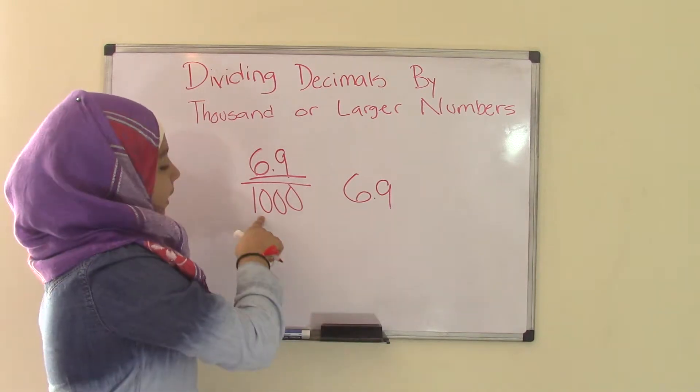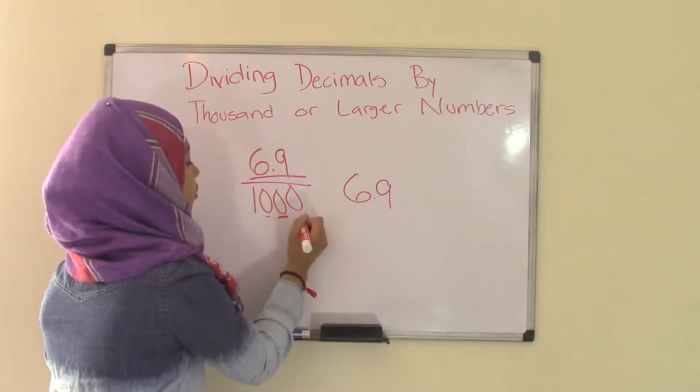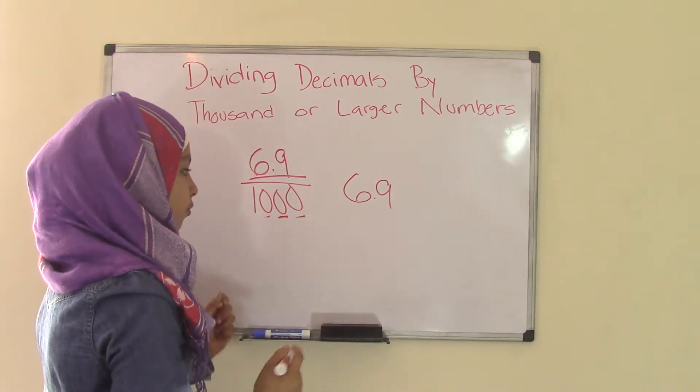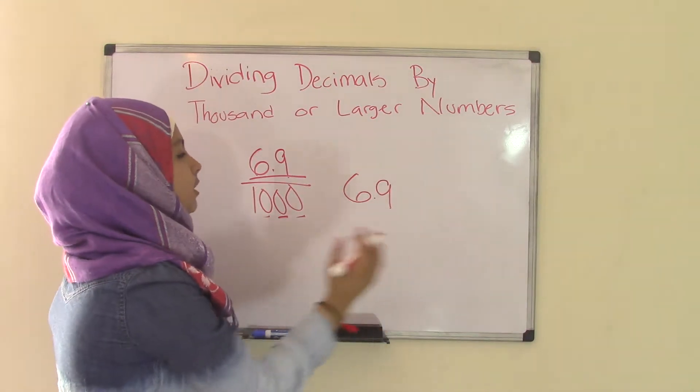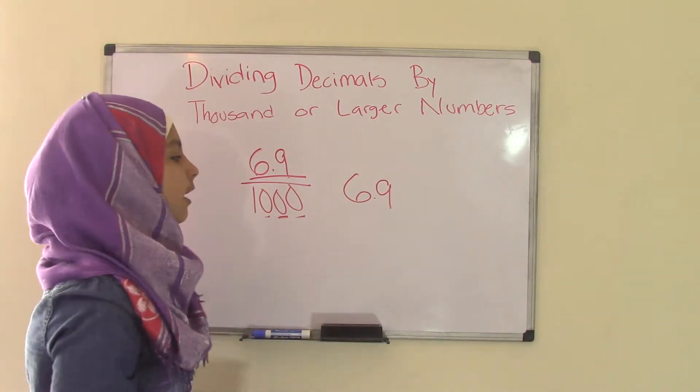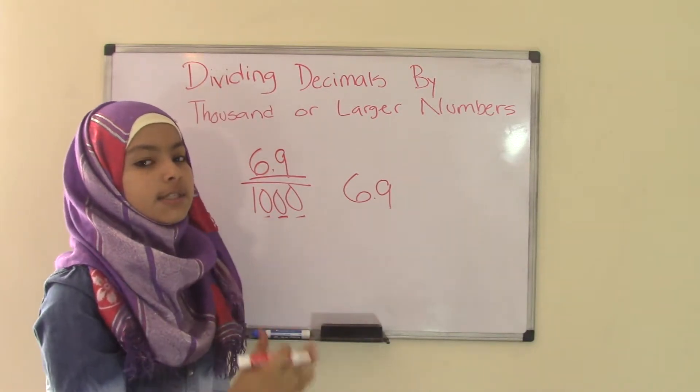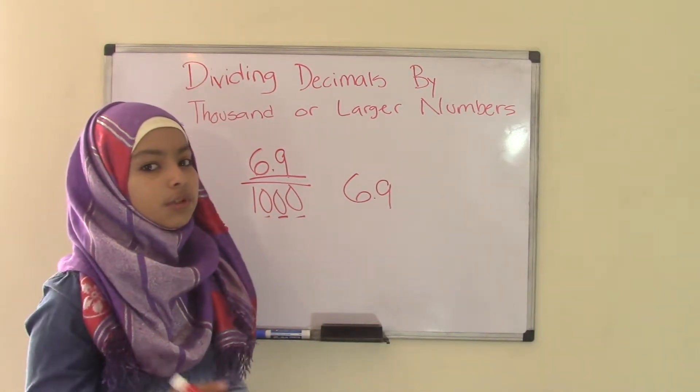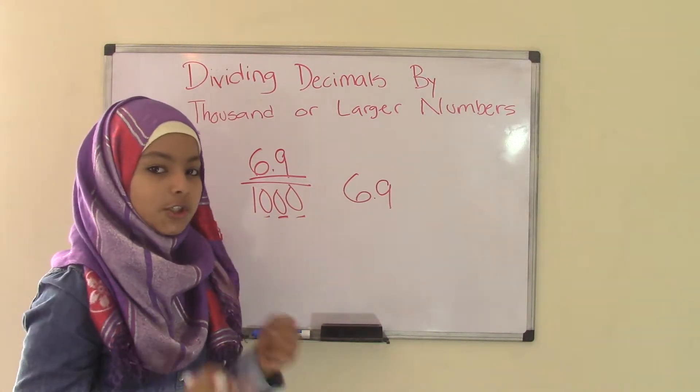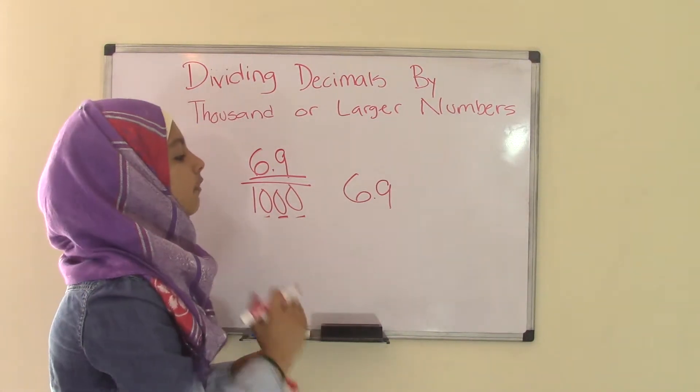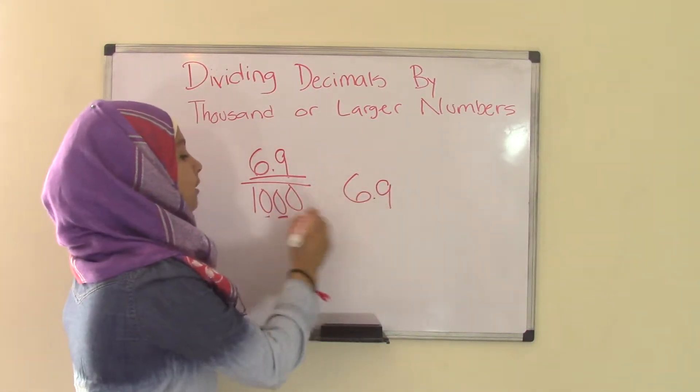Now count how many zeros are in one thousand. That is 1, 2, 3. What we're going to do is move this decimal point three places from right to left. Why right to left? Remember this rule: left to right always increases the value, and that's only used in multiplication. In division, we use the opposite method which is right to left.